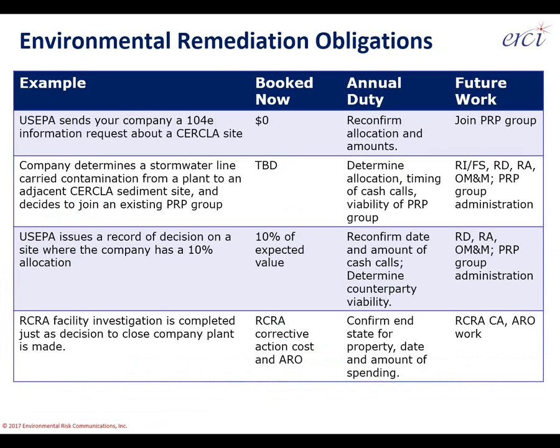Final remediation example: a RCRA facility investigation is completed and areas of concern are identified just as the company decides to close the plant. Now you have RCRA corrective action for spills as well as an ARO to coordinate for demolition and pond closure. You have normal operation work and spill work collecting different data, using different types of money. The accounting procedures recognize two different types of liabilities accounted for in slightly different ways — even if the same contractors do the same field work on the same day. The ARO shows up in one place on the balance sheet, the remediation work in another.